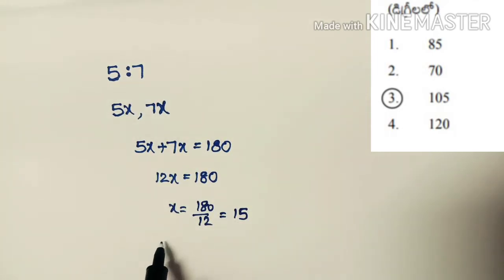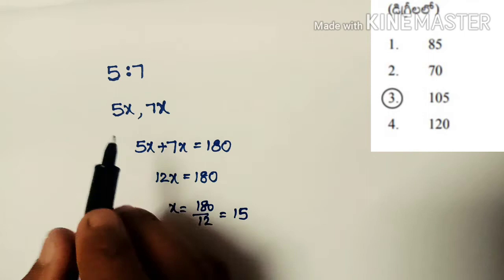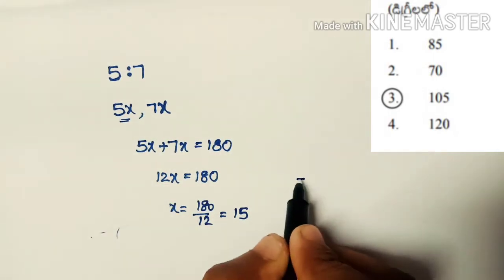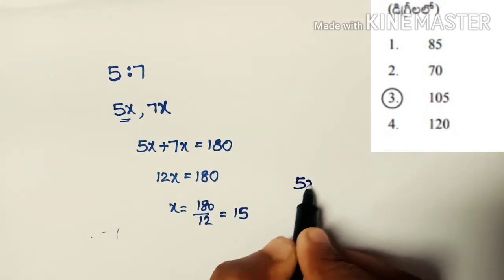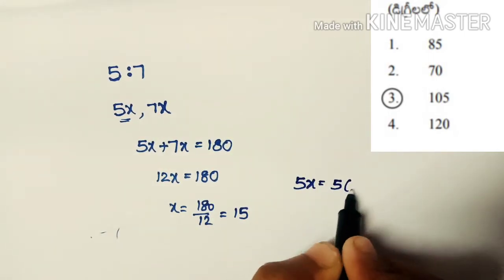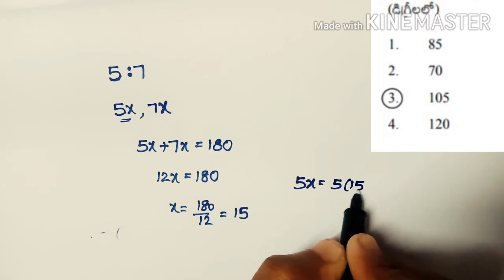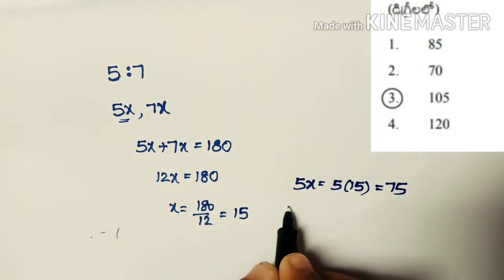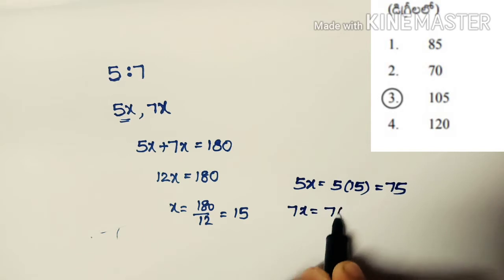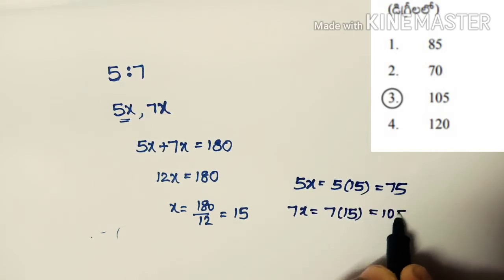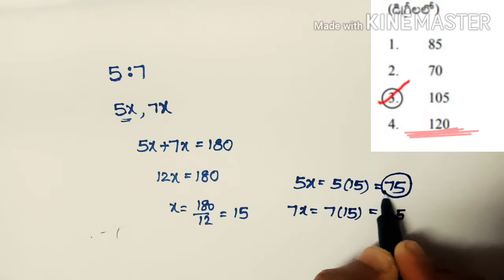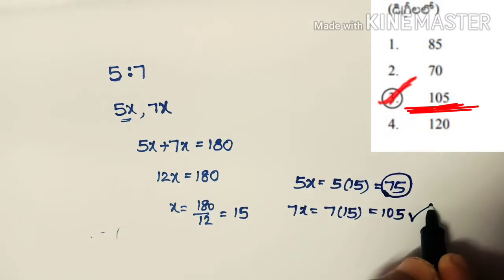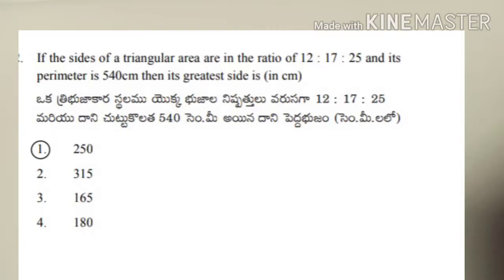The first angle is 5x = 5 × 15 = 75, and the second angle is 7x = 7 × 15 = 105. Since 75 is not in the options, the answer is 105, which is the third option.